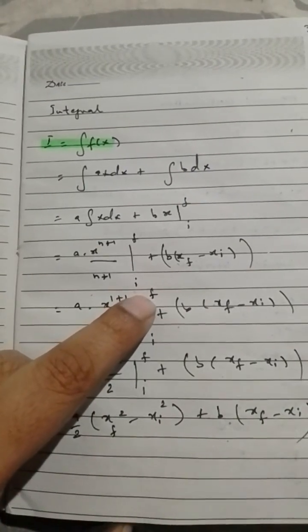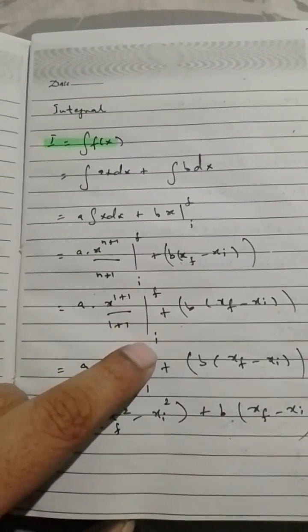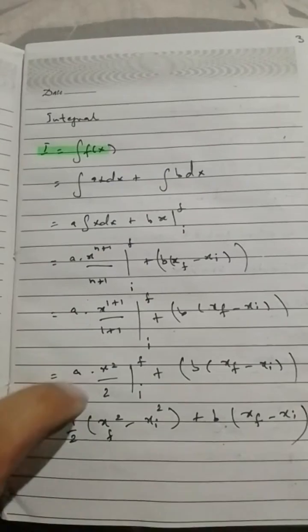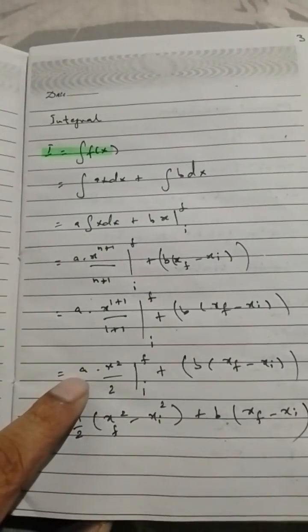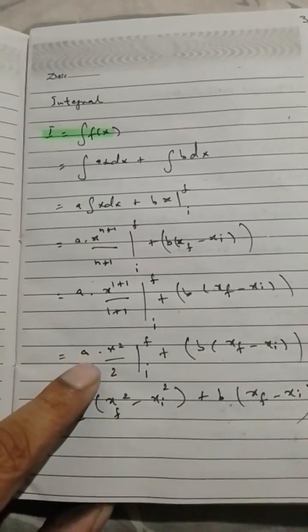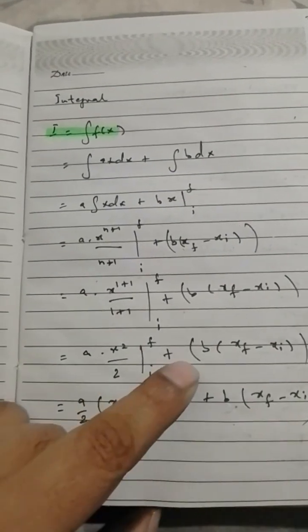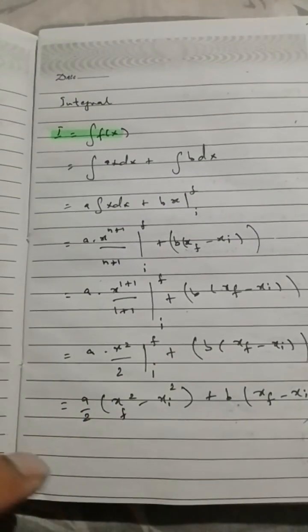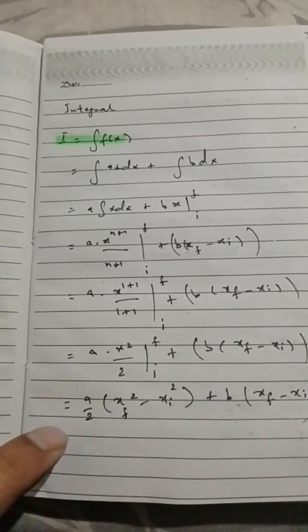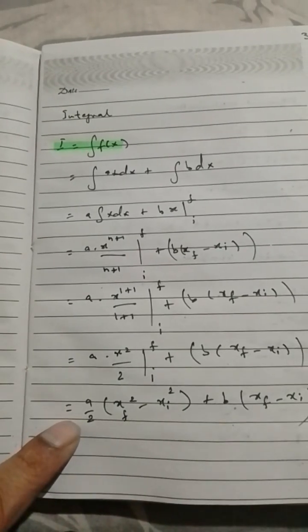f, i, just like that here: ax x^2/2, and then f minus i just like this, b into x: xf minus xi. So a/2(xf^2 - xi^2).